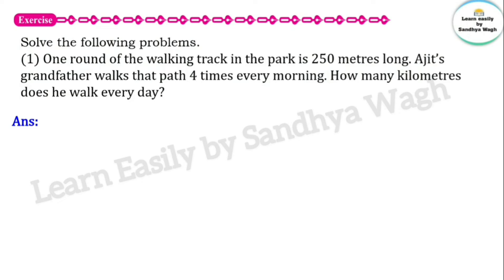First word problem: One round of the walking track in the park is 250 meters long. Ajit's grandfather walks that path four times every morning. How many kilometers does he walk every day? Let's read the word problem carefully and solve it.